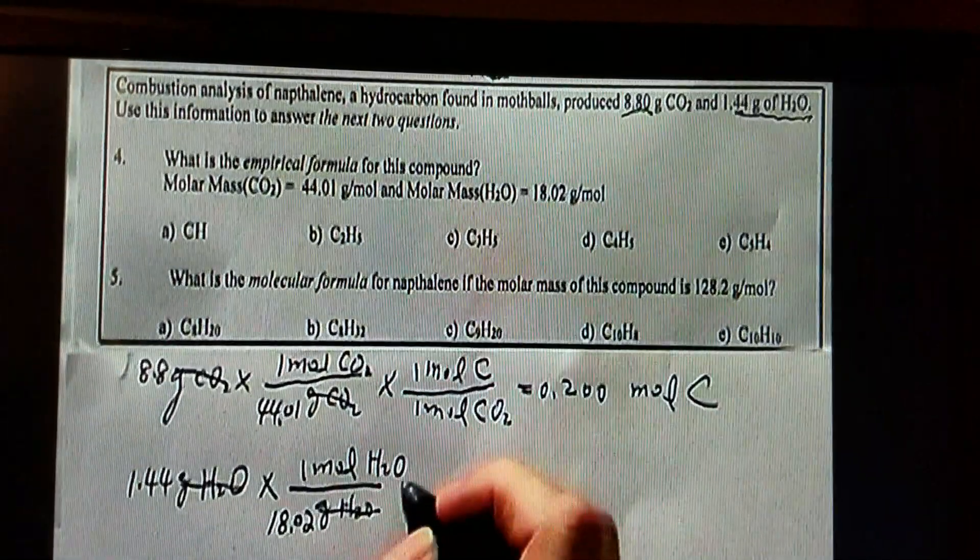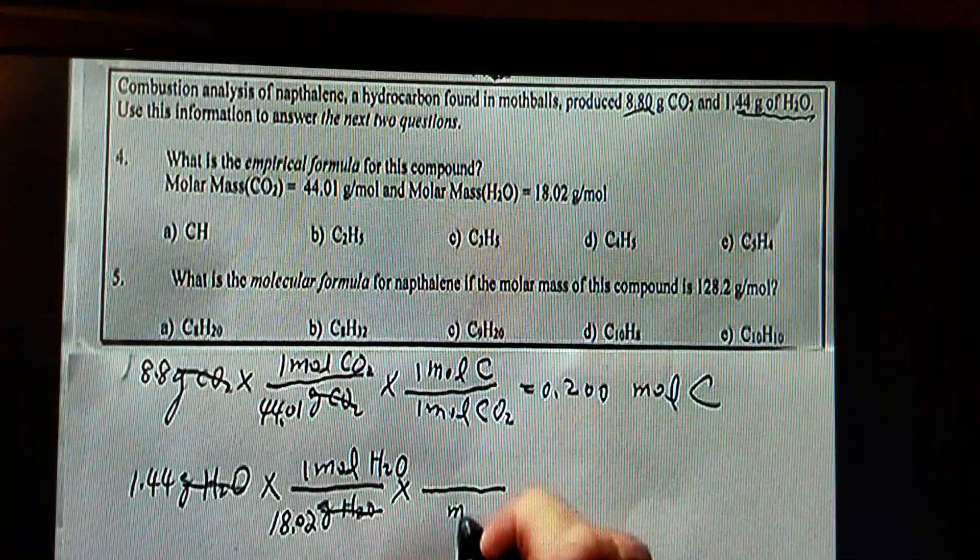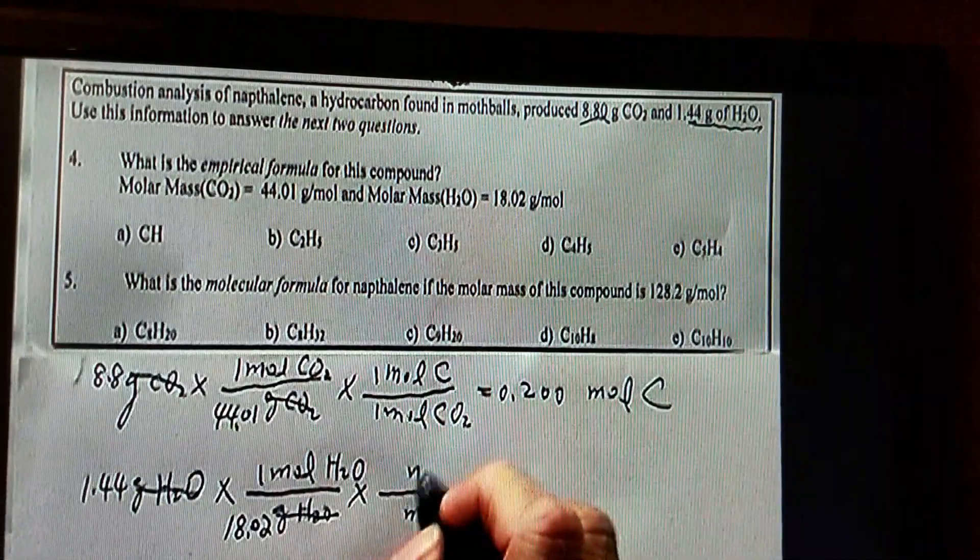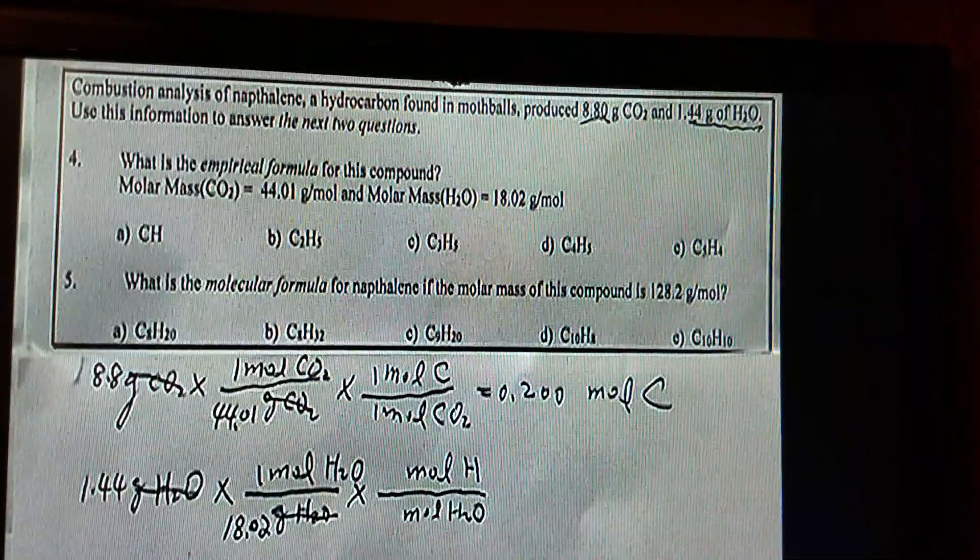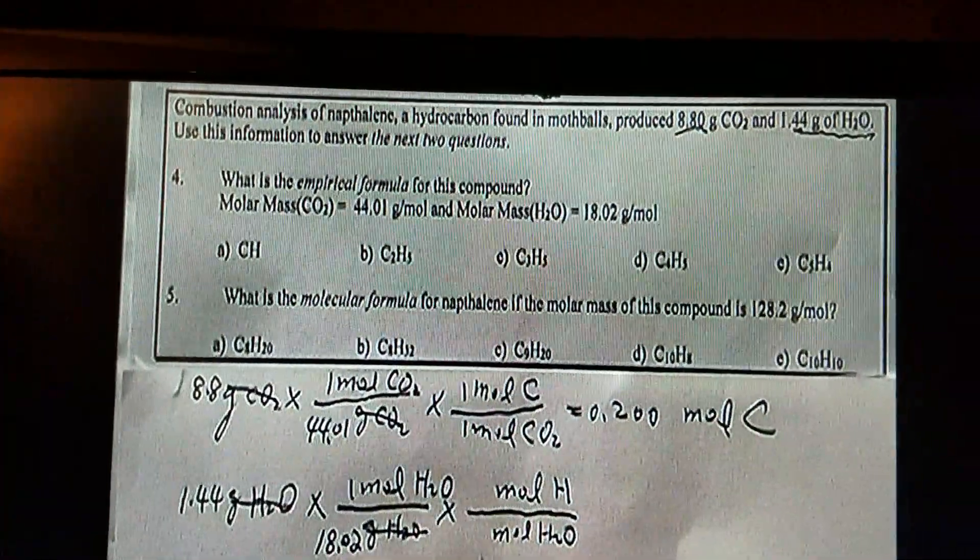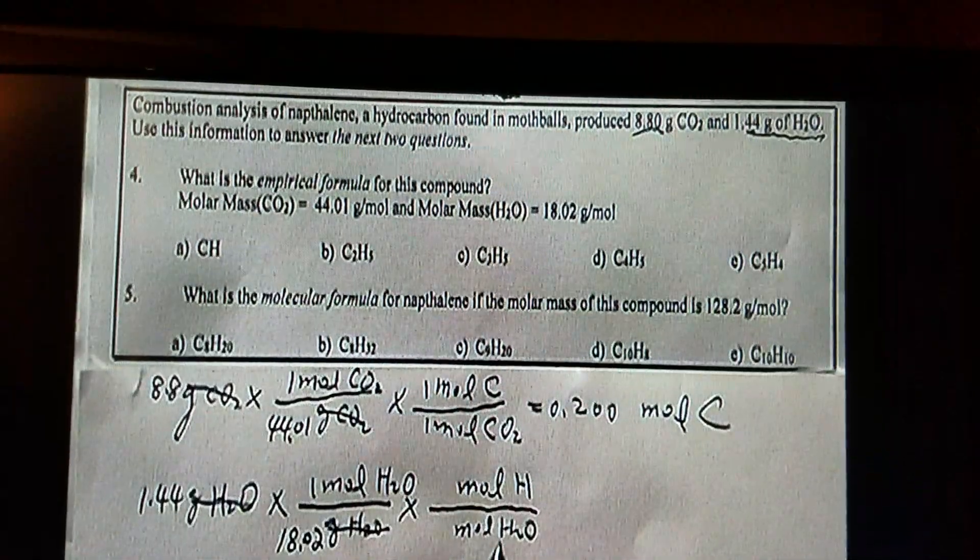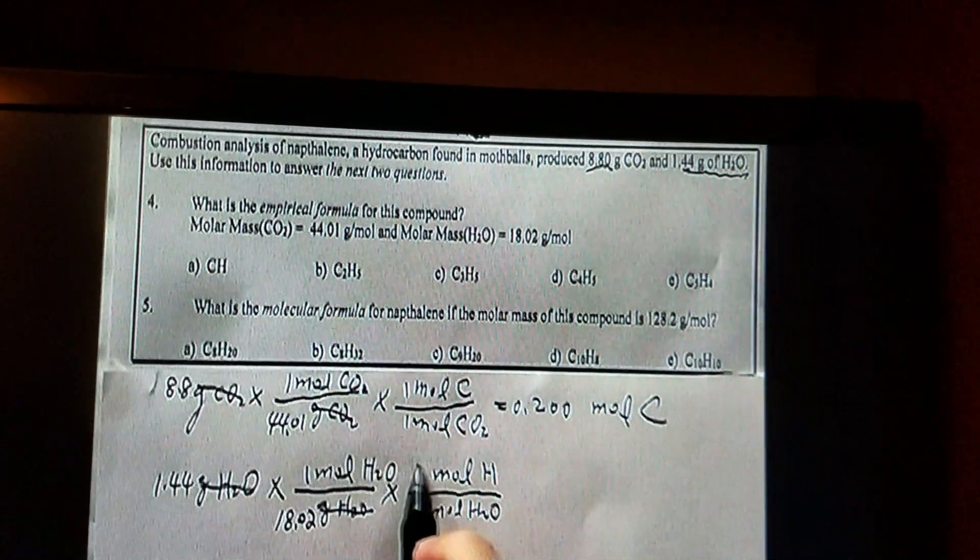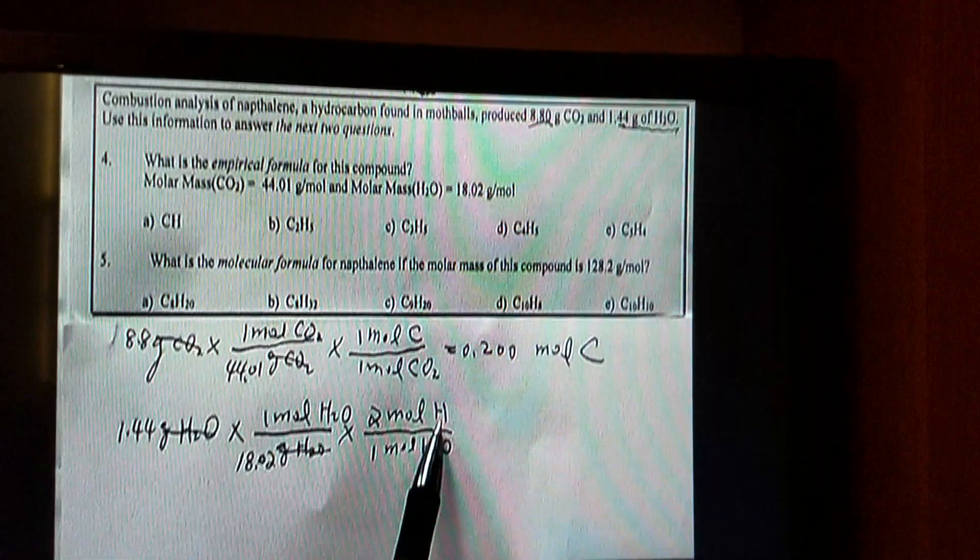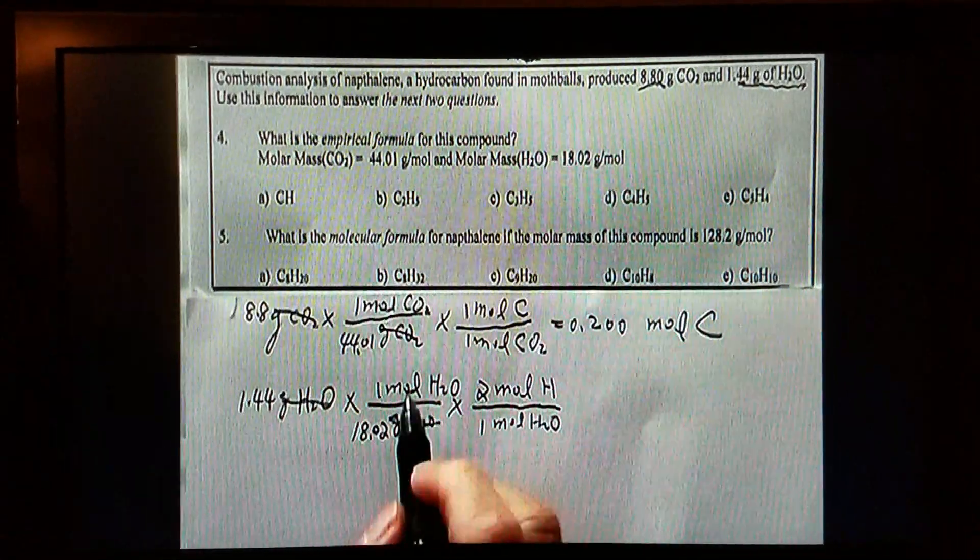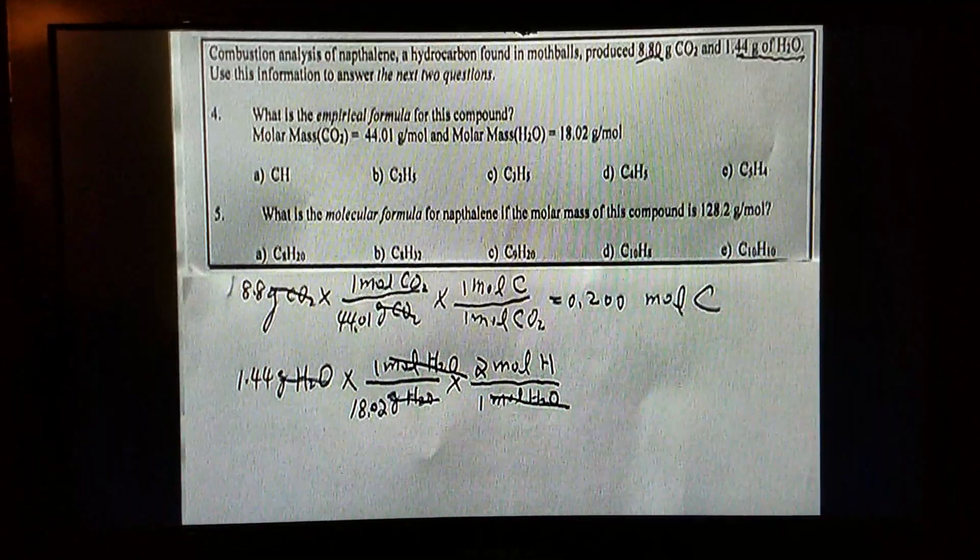Next, we need to convert from moles of H2O to moles of hydrogen atoms, H, not hydrogen molecule, not H2, just H. Now you see, every one mole of H2O gives us two moles of H, one over two. Or in other words, in every one H2O molecule, it should contain two hydrogen atoms. Now you can see moles of H2O are cancelled.